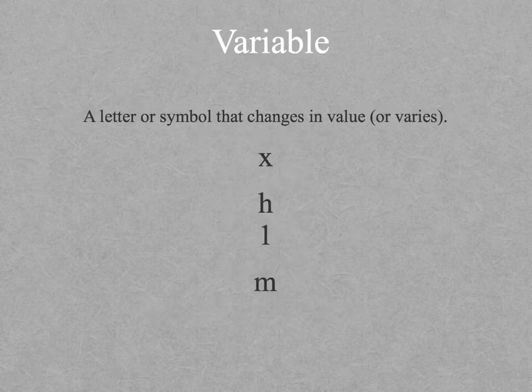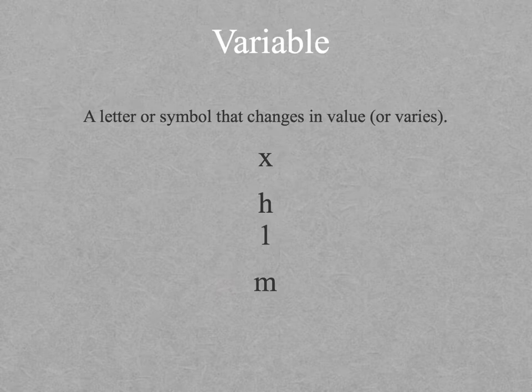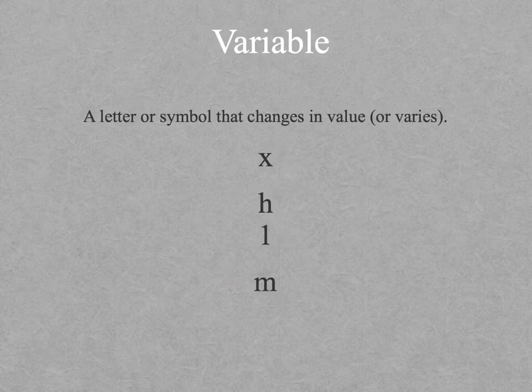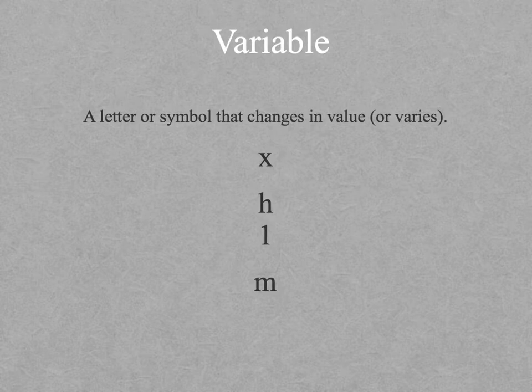A variable is a letter or a symbol that can change in value. We don't always know all the numbers, so we need to show the missing number by using a letter or a symbol. For example, symbols can also vary in each problem.